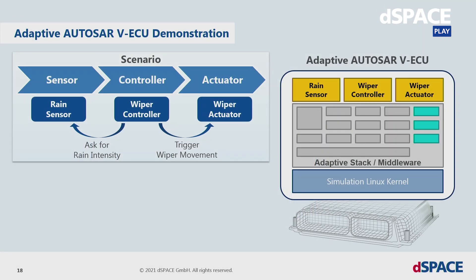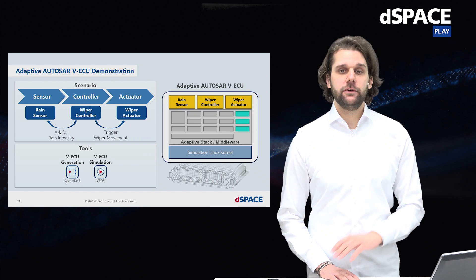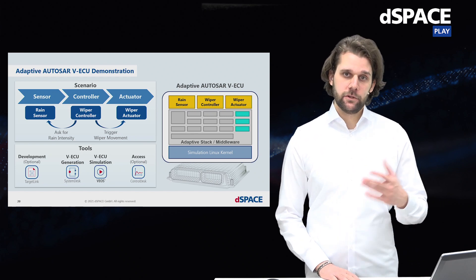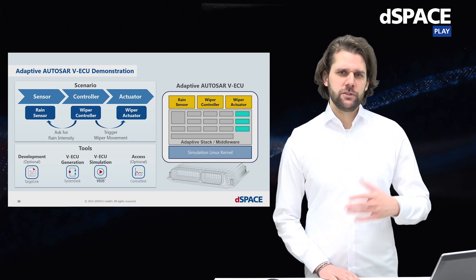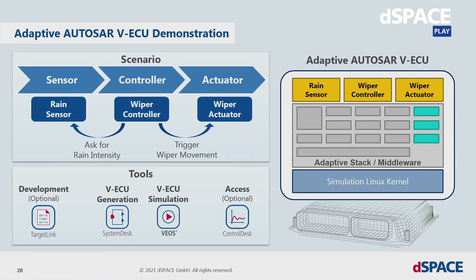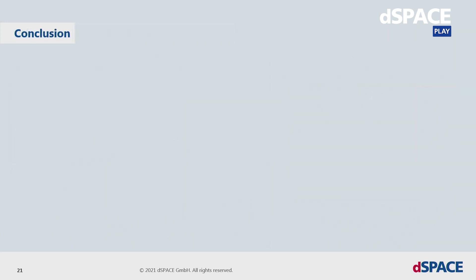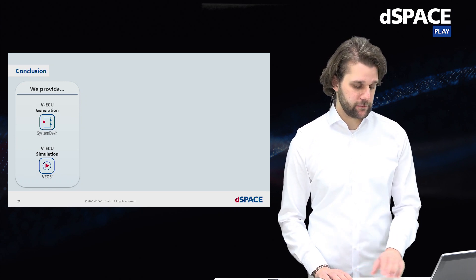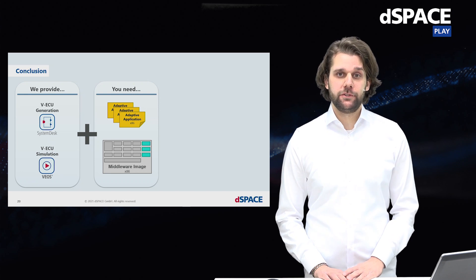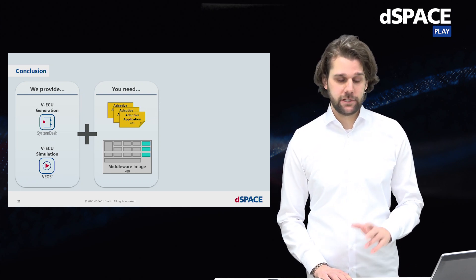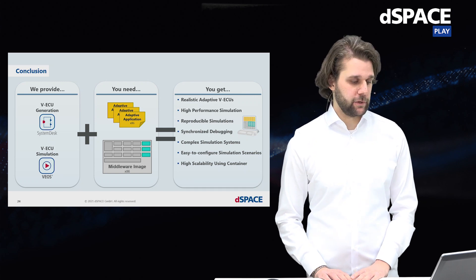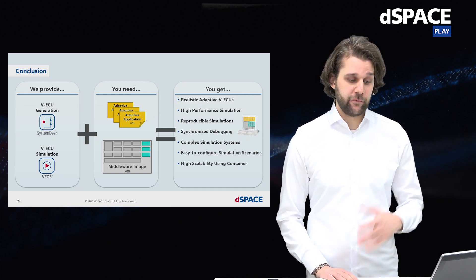So we just saw our adaptive AUTOSAR virtual ECU, using two tools: SystemDesk to create the virtual ECU, and VEOS to simulate it. There are more tools in the DSpace world — for example, TargetLink to develop adaptive applications, and ControlDesk to get more comprehensive access to your virtual ECUs. In conclusion, DSpace provides tools to create and simulate virtual ECUs. You need your adaptive applications and middleware image for the x86 architecture, and then you have your adaptive AUTOSAR virtual ECUs.